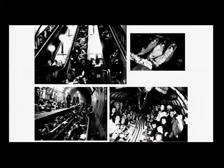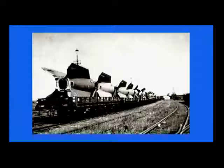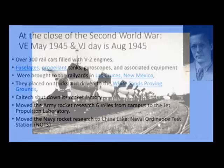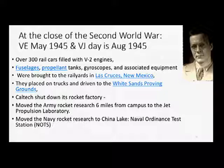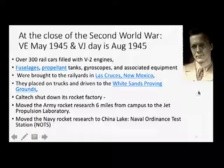This is the way people lived in London during the bombing — the London subway. This is a line of German V-2 rockets coming out of the factory, all ready to be distributed to launching sites that Aidan uncovered. At the close of the Second World War — Victory in Europe was May 1945, Victory in Japan was August 1945 — over 300 rail cars filled with V-2 engines, fuselage, propellant tanks, gyroscopes, and associated equipment were brought to the rail yards of Las Cruces, New Mexico, placed on trucks and driven to White Sands Proving Grounds. Caltech shut down the factory and moved their Army rocket program to the Jet Propulsion Laboratory, and the Navy rocket research work was moved to China Lake.